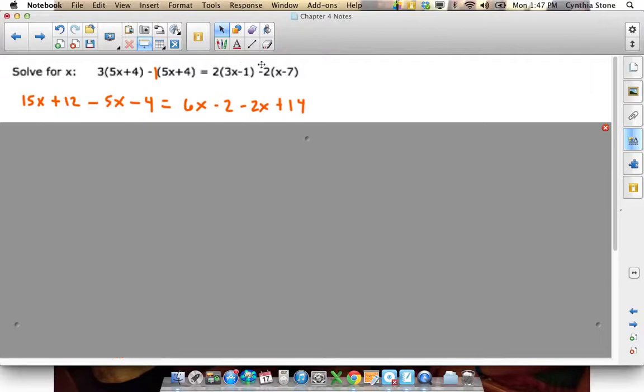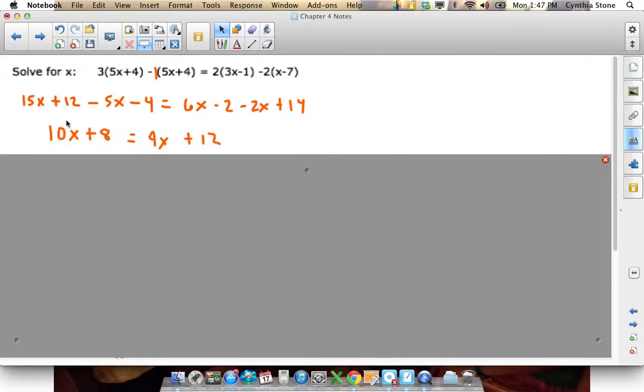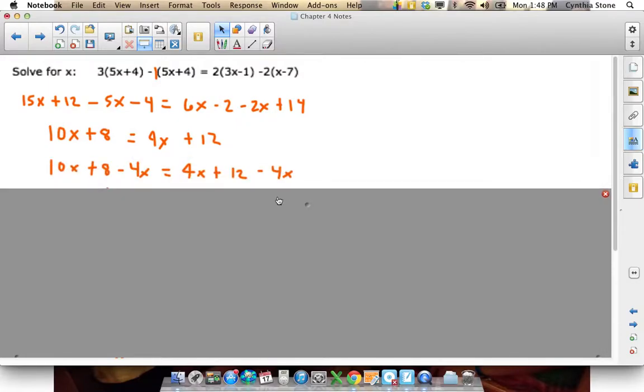So that's that whole side without the brackets. And then after that equal side, 2 times 3x is 6x. 2 times negative 1 is minus 2. Minus 2 times x is minus 2x. And minus 2 times minus 7 is positive 14. So that looks like a lot, but if you just take it one bracket at a time, it's not so bad. In this next step I've just collected all the like terms on each side. So 15x minus 5x gives me 10x. Plus 12 minus 4 is plus 8. Over here I've got 6x minus 2x to get 4x, and minus 2 plus 14 to get plus 12. Now I'm going to bring all my x's to the same side of the equation. So I subtract 4x from each side.